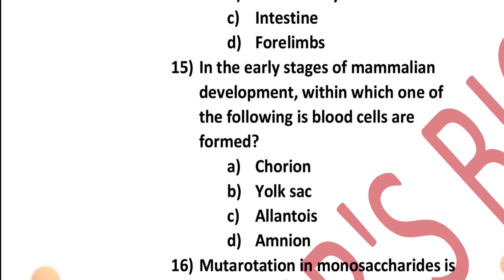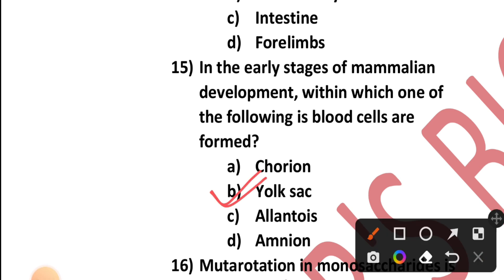Question number fifteen: In the early stages of mammalian development, within which one of the following are blood cells formed — chorion, yolk sac, allantois, or amnion? In the early stages of mammalian development, blood cells are formed in the yolk sac. Option B.